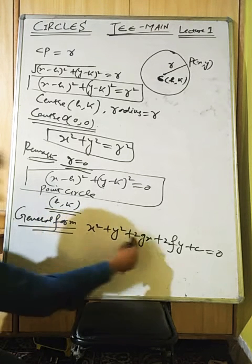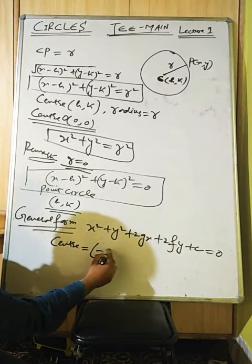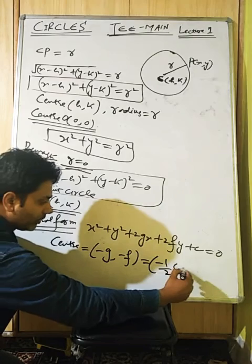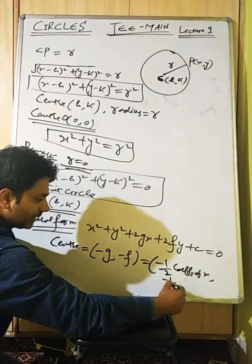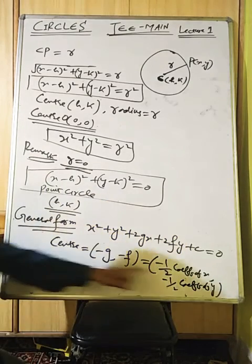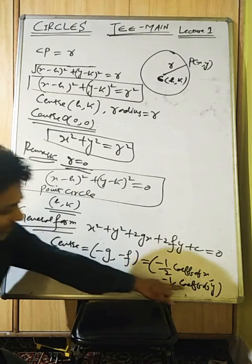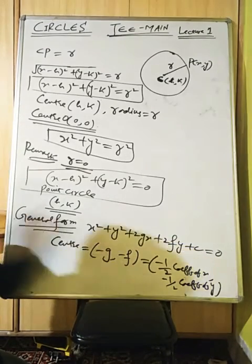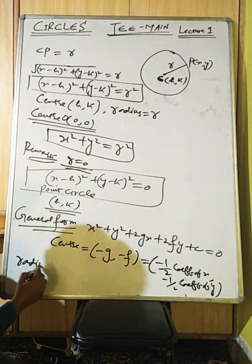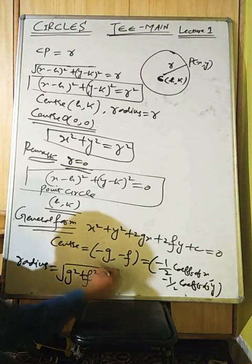For the general equation, there should be no term containing xy. The center is (−g, −f) — that is, minus half the coefficient of x and minus half the coefficient of y. The radius is √(g² + f² − c).